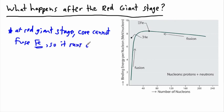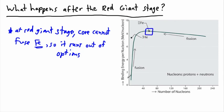So it runs out of options — it can't contract further. Iron is the element that has the highest binding energy per nucleon, and this tells us that fusion cannot fuse anything higher than iron because it's not energetically favorable. So as a result, what happens depends on the mass of the star.